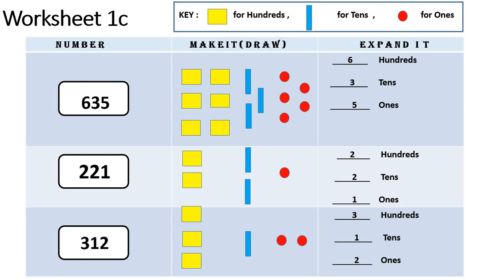This is Worksheet 1C. The question is: I will write a three-digit number on the board and you will draw symbols to show the numbers and expand each number. The key is: a square is for hundreds — draw it in yellow. A bar is for tens — draw it in blue. A circle is for ones — draw it and color it. First number is 635: draw 6 blocks in yellow, 3 bars in blue, 5 circles. Then write in expanded form: 600, 3 tens, 5 ones.